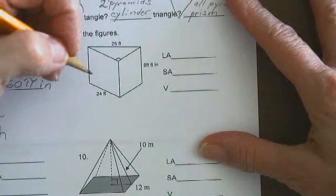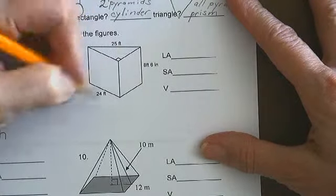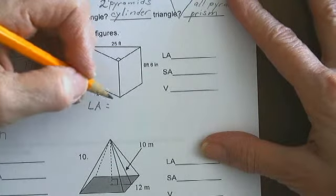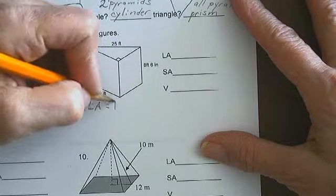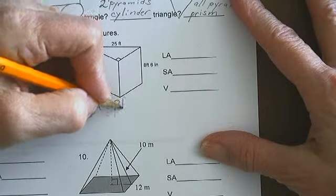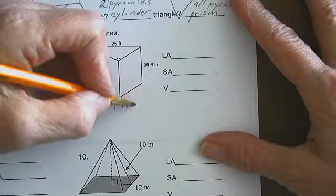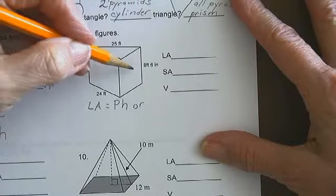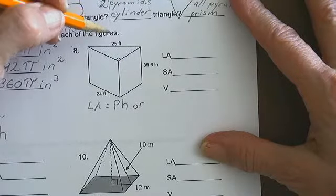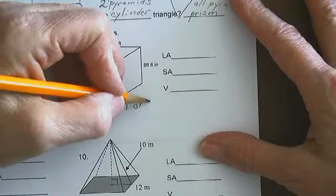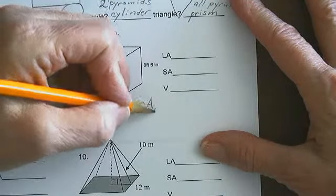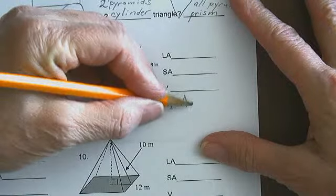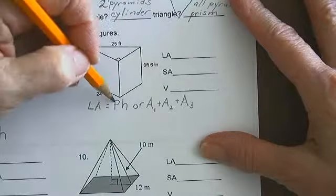What are the formulas that we need for a triangular prism? Lateral area is equal to the perimeter times the height, or side 1 plus side 2 plus side 3. I like this one myself, but some people prefer this one.